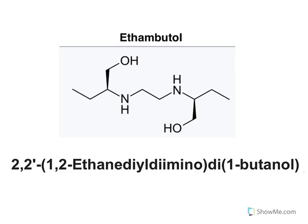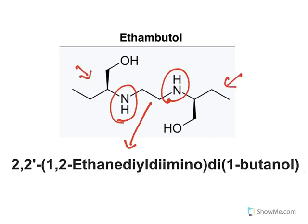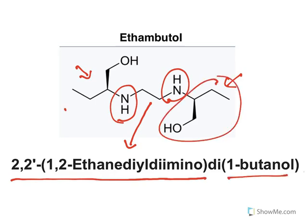Ethambutol is made up of an ethane backbone with two diimino groups to which two butanol groups are attached. Its IUPAC name is 2,2'-(ethane-1,2-diyldiimino)di-1-butanol. As previously mentioned, ethambutol affects cell wall synthesis of Mycobacterium tuberculosis.